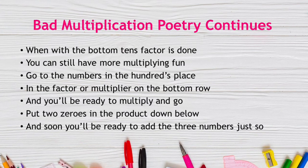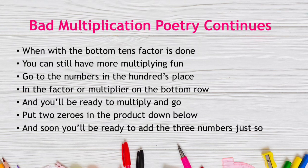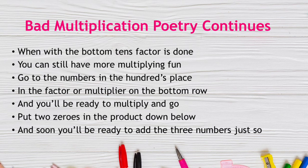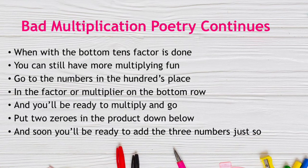When the bottom tens factor is done, you can still have more multiplying fun. Go to the number in the hundreds place in the bottom factor, and you'll be ready to multiply and go. Put two zeros in the product down below, and soon you'll be ready to add the three numbers.